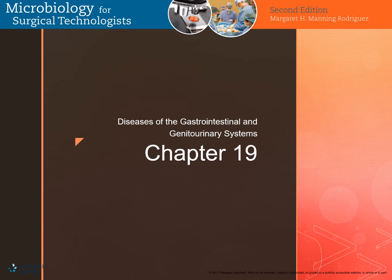Chapter 19 covers diseases of the gastrointestinal and genitourinary systems. We're going to talk about general classifications of diseases related to both systems, the pathogens associated with diseases of those systems, and finish with a discussion regarding the consequences of untreated sexually transmitted diseases.